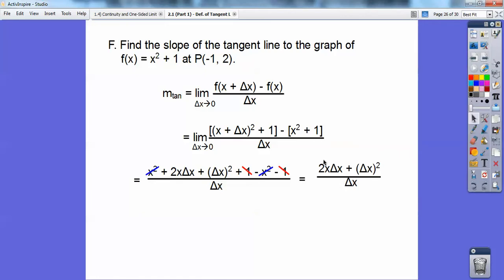Notice I can pull out a Δx out of this guy and this guy. When I pull a Δx out of that, I'm left with that. Then notice the Δx's can cancel. Once the Δx's cancel, I can now let my other Δx in the numerator get close to 0. When this gets close to 0, that goes away and I'm just left with 2x. So this simplifies to 2x. That's the slope of the tangent.